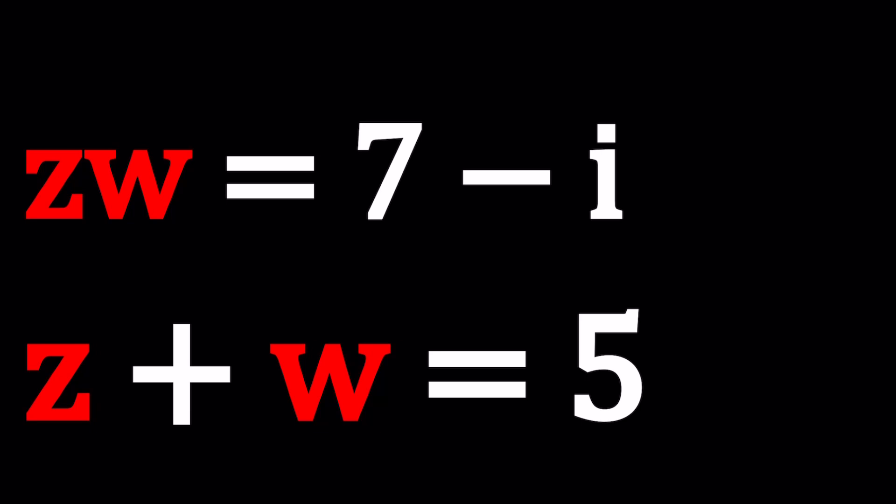with complex numbers. So we have ZW equals 7 minus I and Z plus W equals 5 and we're going to be solving for Z and W. Let's see how we can solve this problem in more than one way.